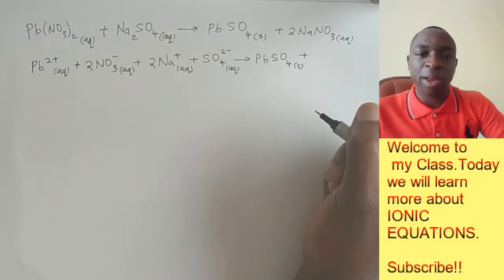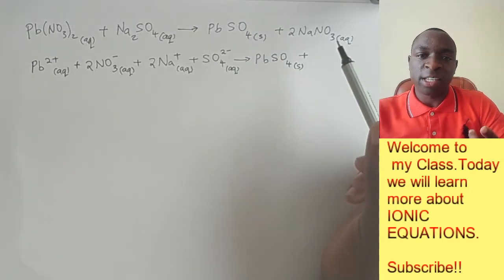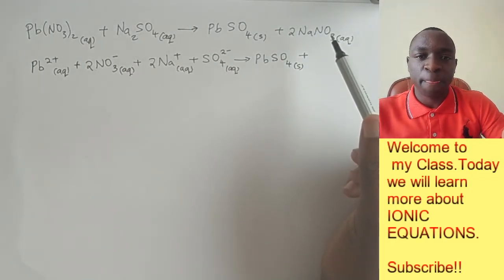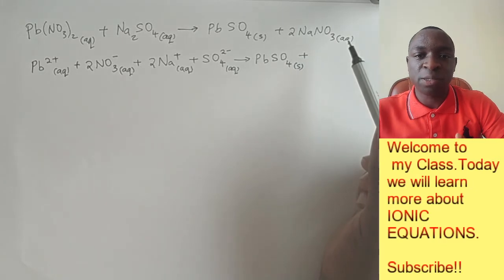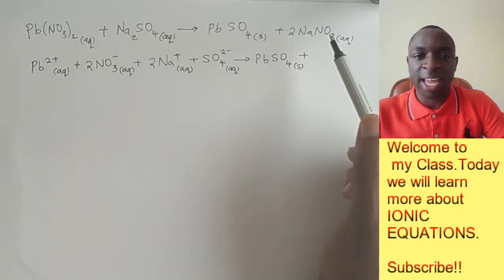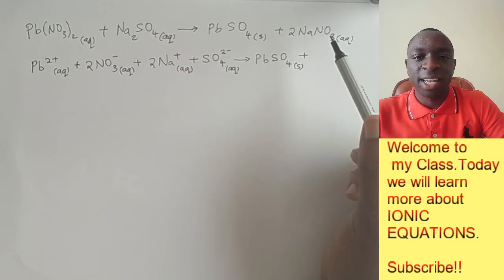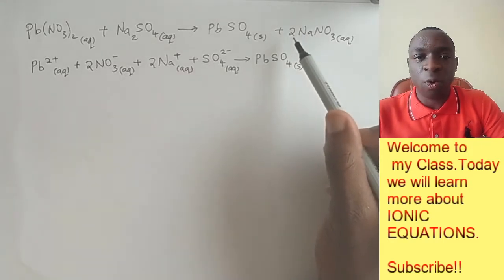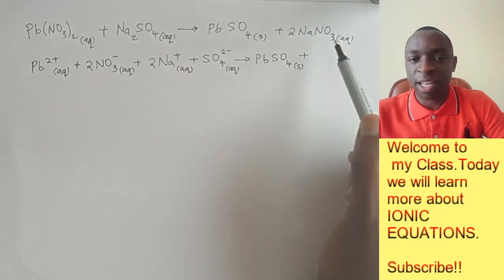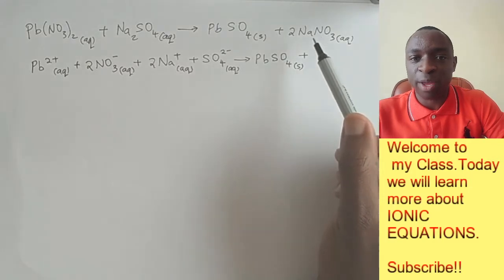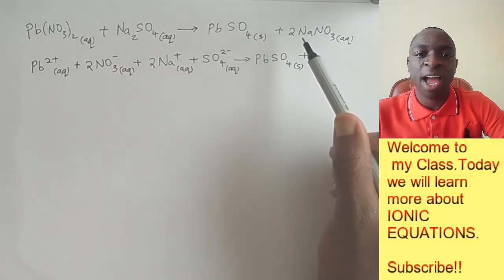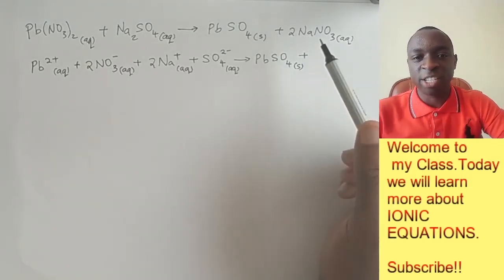And then of course, now we are left with sodium nitrate here. So this is in aqueous state. So we need to split it into sodium ions and nitrate ions. However, when you look at it, we have a two before the compound. So it means that everything here is times two. So we have two sodium ions and you also have two nitrate ions.